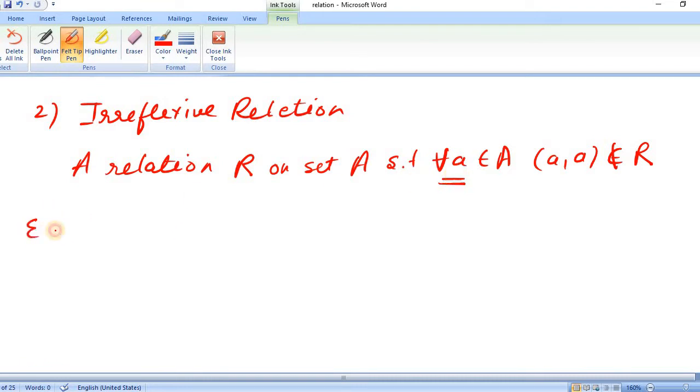Now, let us understand this with the help of an example. Let us say we have a set A with elements 1, 2, and 3, and a relation R which has ordered pairs (1,2), (1,3), and (2,3).